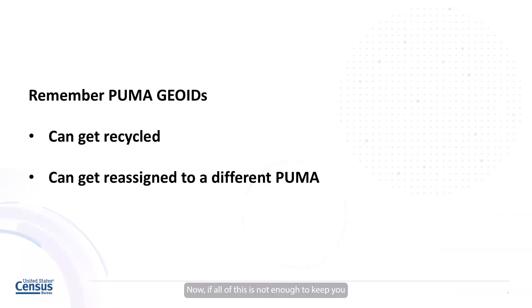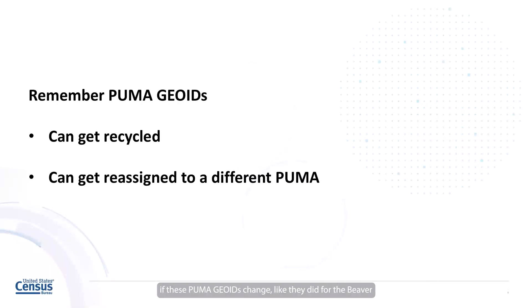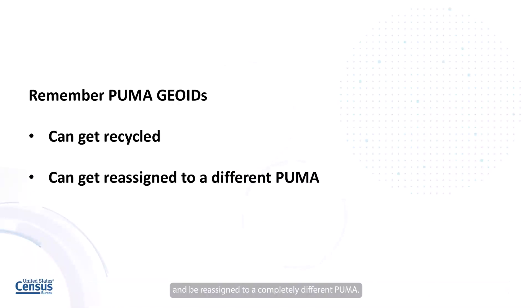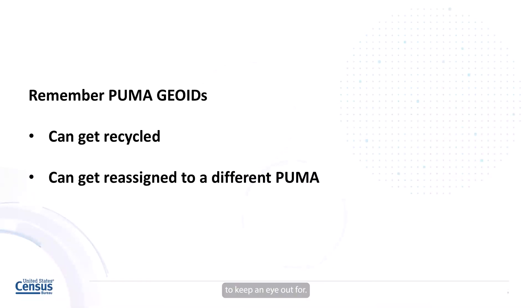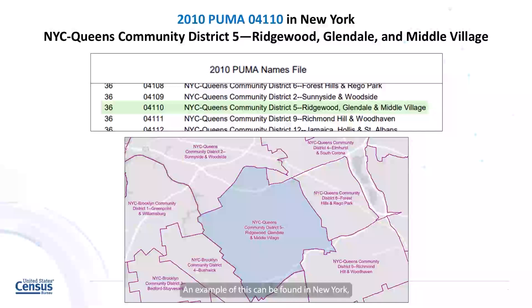Now, if all of this is not enough to keep you on your toes, there's also one other thing to be aware of. While overall it's not a frequent occurrence, if these PUMA GOIDs change like they did for the Beaver County South PUMA, they aren't always just discarded. Rather, they can get recycled and be reassigned to a completely different PUMA. Again, this isn't a frequent occurrence, but it is something to keep an eye out for. An example of this can be found in New York, most notably for PUMAs in New York City.